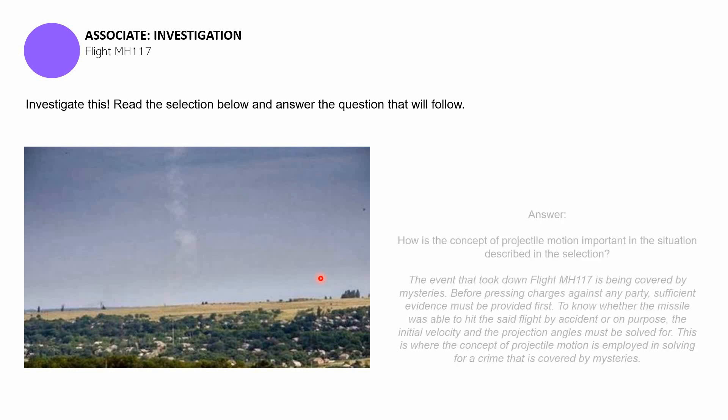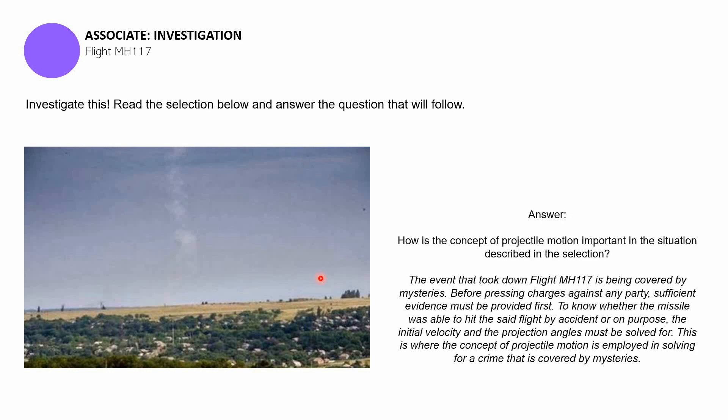Okay, now for the answer to this question: the event that took down flight MH117 is being covered by mystery. Before pressing charges against any party, sufficient evidence must be provided first. So, to know whether the missile was able to hit the said flight by accident or on purpose, the initial velocity and the projection angles must be solved for.